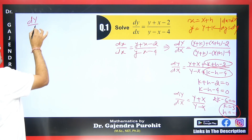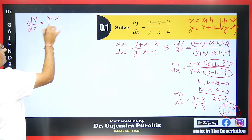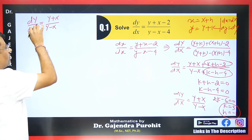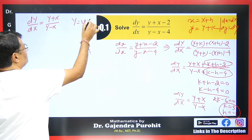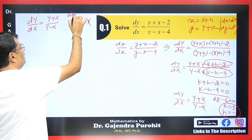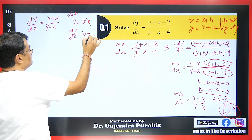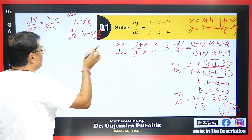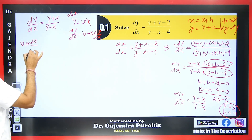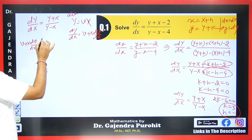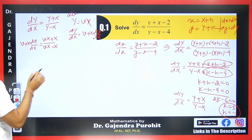The homogeneous differential equation we now have is dY/dX = (Y + X) / (Y - X). Since this is a homogeneous equation of degree one, we solve it using the substitution capital Y = v·X. When we differentiate, dY/dX = v + X·dv/dX. We substitute this value into the equation.